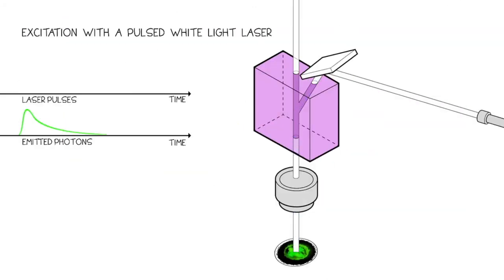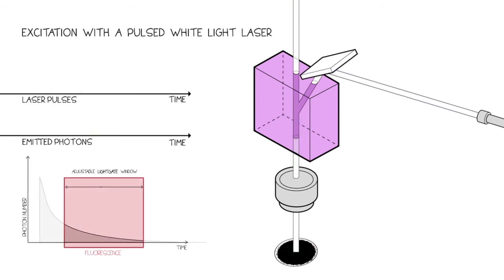Gated STED takes advantage of Leica's unique lightgate feature to provide greater resolution flexibility and improved contrast. Lightgate works through the synergy of the pulsed white light laser and the gated hybrid detectors.